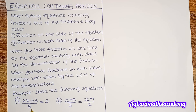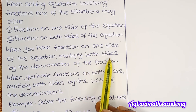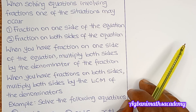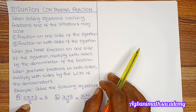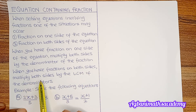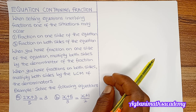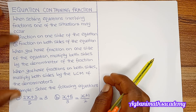Let's look at two examples. In the first example, we have a fraction on the left side only. In the second example, we have fractions on both sides. When you have a fraction on one side, multiply both sides by the denominator of that fraction — the reason being to eliminate the denominator. When you have fractions on both sides, multiply both sides by the LCM of both denominators.